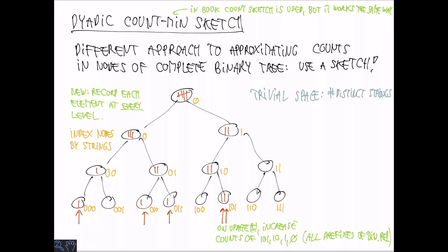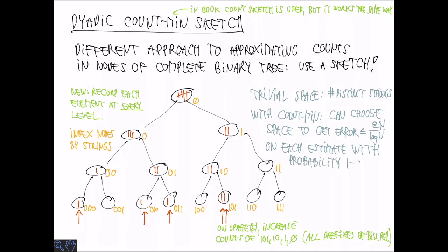Trivially, if we would just store this directly, we would need to store the number of distinct strings, which could be huge. But with count min, we can basically decide the space ourselves and we are going to get an approximation of the counts. We want to choose the space such that the error is at most epsilon n over log u. And each estimate should hold with probability 1 minus delta over log u as well.